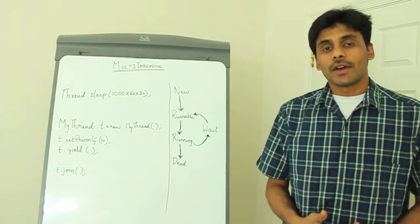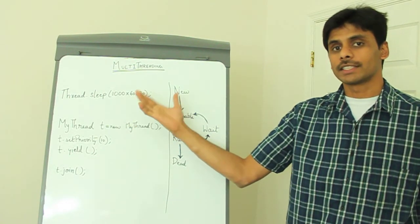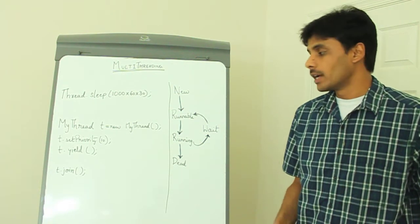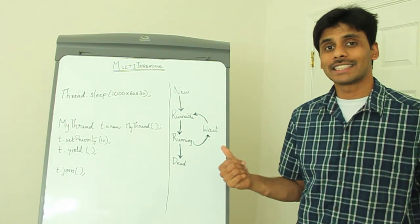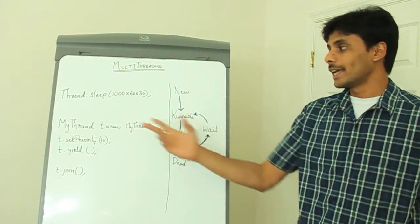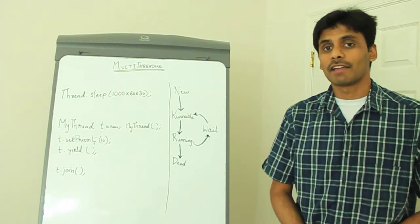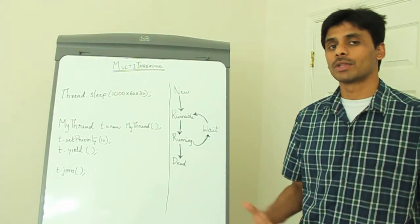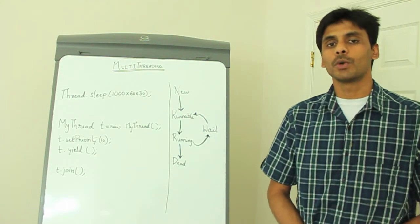A thread, when it comes out of the sleep state, that is when the 30 minutes or 30 seconds or whatever time you specify completes, it will be moved to the runnable state, not to the running state directly. Then it's up to the thread scheduler again to move it to the running state. So it's not the exact time you specify, but the thread scheduler might take a few more milliseconds. The time you specify is the minimum time that the thread will be put to wait.